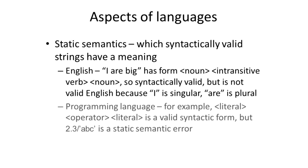In programming languages, we see similar things. A literal followed by an operator followed by another literal — where a literal refers to a number, string, or other legal combination — is syntactically valid. But in Python, 2.3 divided by the string 'ABC' is not semantically valid; it's a static semantic error because we can't divide numbers by strings. So we talk about the static semantics of putting things together to create legal expressions.